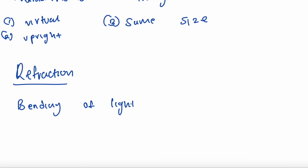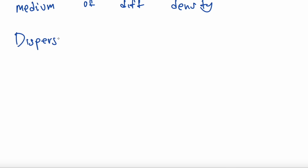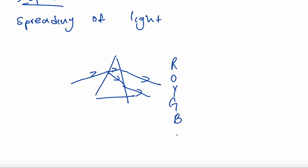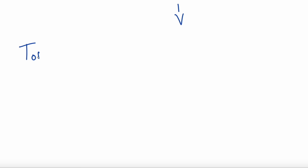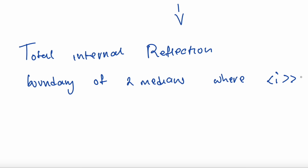Refraction is the bending of light when traveling through a medium of a different density. Dispersion is the spreading of light into the spectrum ROYGBIV. Total internal reflection occurs at the boundary of two mediums when the angle of incidence is greater than the critical angle.